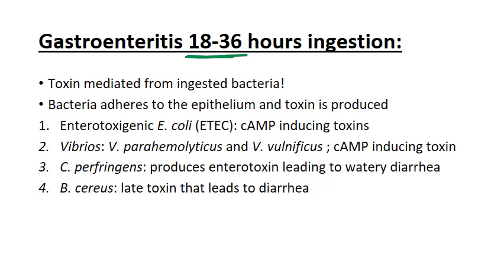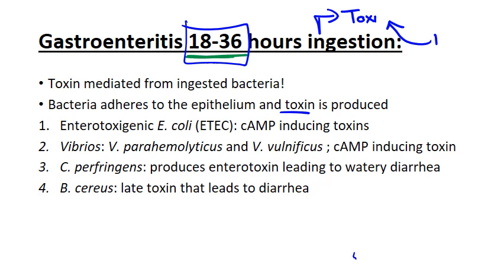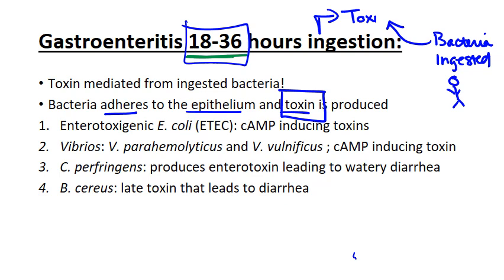Scenario two: gastroenteritis that begins 18 to 36 hours after ingestion. We're still talking about a toxin-mediated infection, but in this case the toxin is being produced by bacteria the patient actually ingested. Unlike scenario one where they ingested the toxin directly, here they ingest the bacteria, and as the bacteria die inside the patient they produce the toxin. The bacteria actually adhere to the epithelium, the toxin is produced locally within the gastrointestinal tract, and that leads to a watery diarrhea.